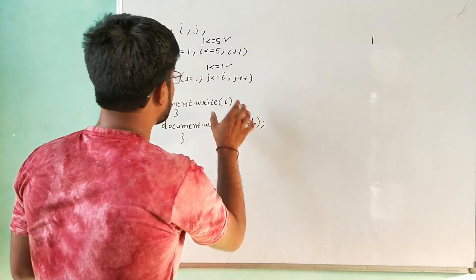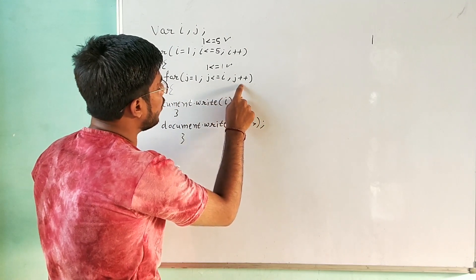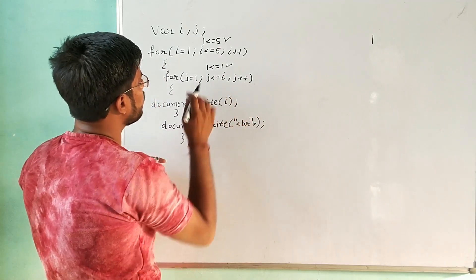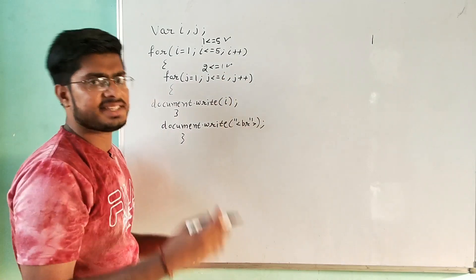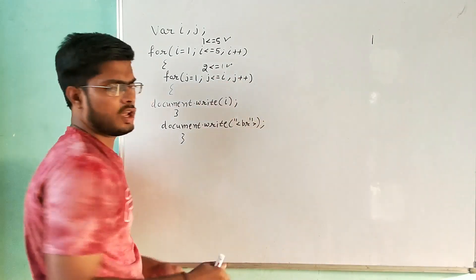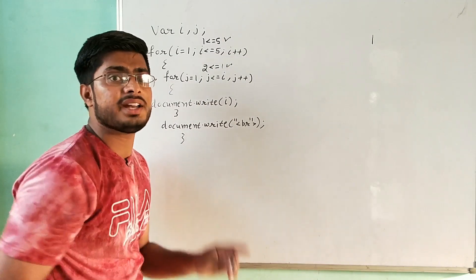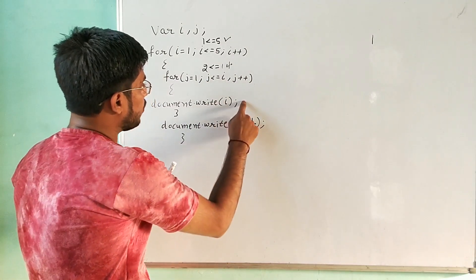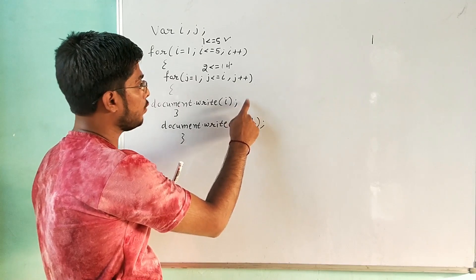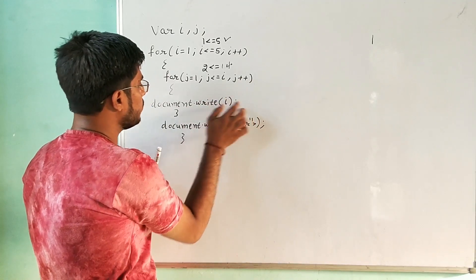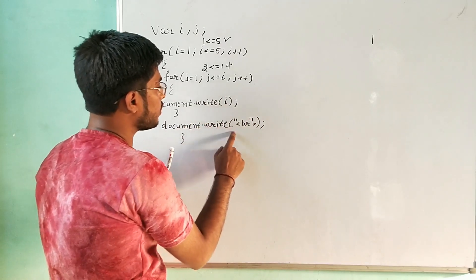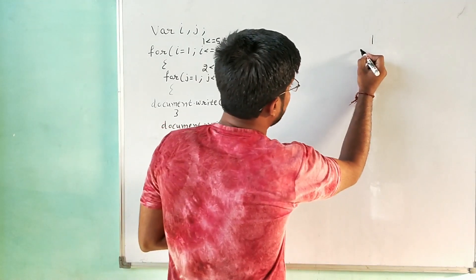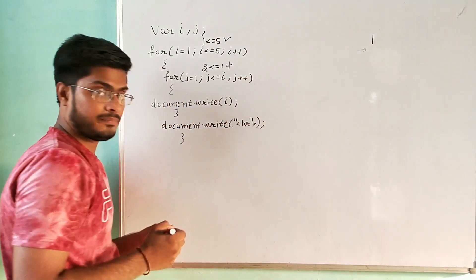Since the inner loop condition is false, it goes outside the loop. Outside the loop, there is a document.write with a BR tag for the next line. So it inserts a newline here. Then it goes back to the outer for loop, where i was 1. After incrementing, i becomes 2.